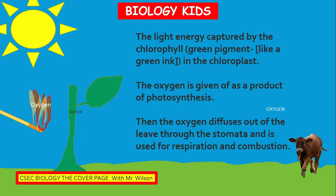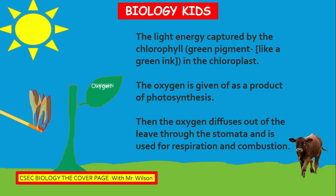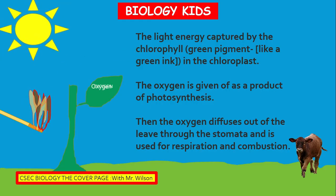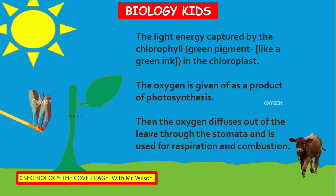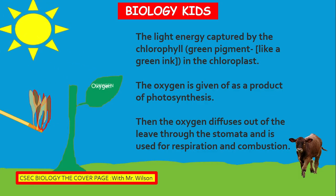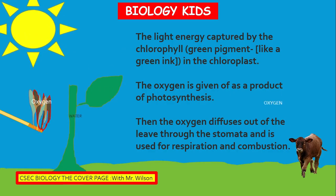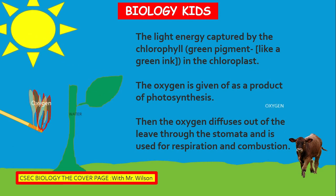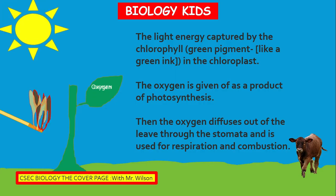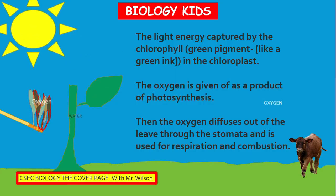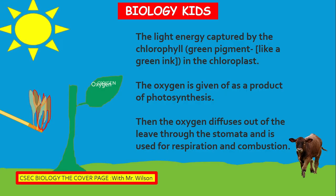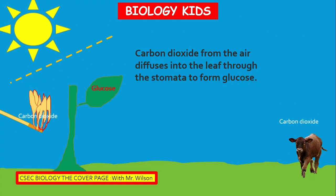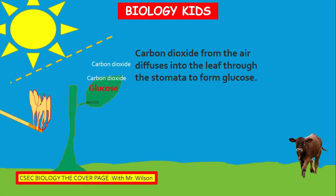The oxygen diffuses out of the leaves through the stomata and is used for respiration and combustion. Which one is using oxygen for respiration — the fire or the cattle? Combustion produces more heat energy, while respiration produces less heat energy. It is the cattle that is using the oxygen for respiration, and the fire using oxygen for combustion.